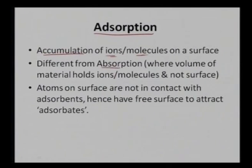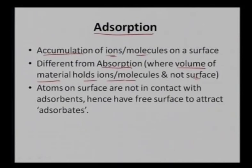Adsorption is different from absorption because in absorption the volume of material holds the ions and molecules, not the surface. In absorption, the bulk of a material takes part in attracting the species, whereas in adsorption the particular species — it can be an ion or a molecule — stays on the surface of a particular substrate or adsorbent. Once any surface is exposed to any environment, it is the surface which comes in contact first, and only then can the bulk volume take part in dictating subsequent phenomena.